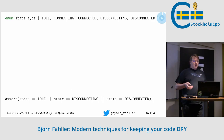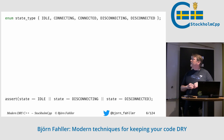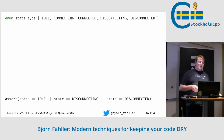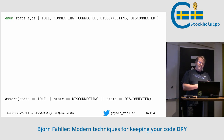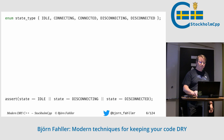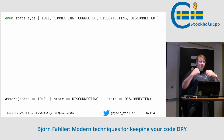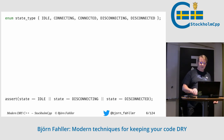So we have this: we have some state type — idle, connecting, connected, disconnecting, disconnected — and we have an assertion. And like I said, I find this code a little bit annoying. So what can we do about this? Because I want to get rid of things that annoy me.